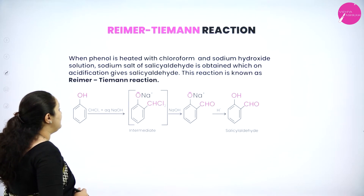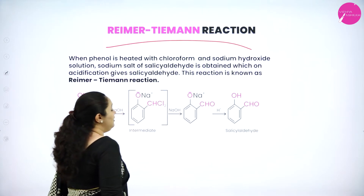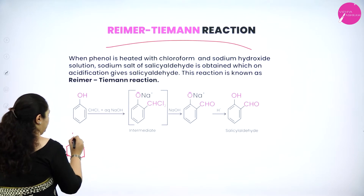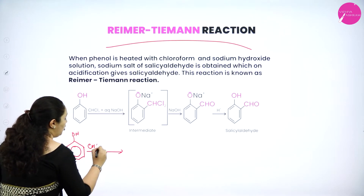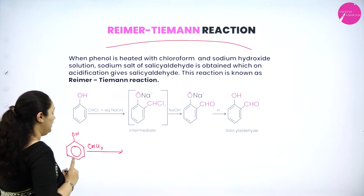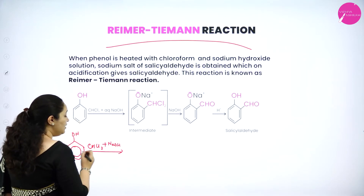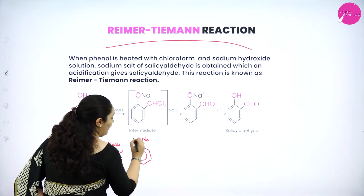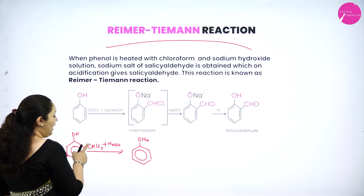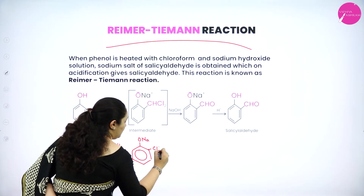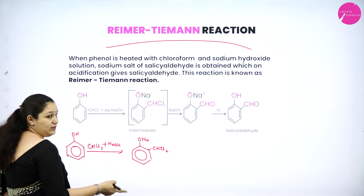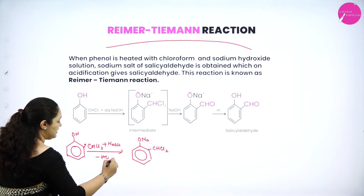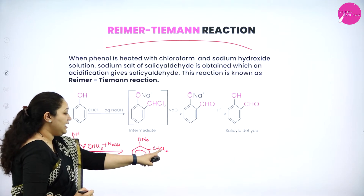Next is the Reimer-Tiemann reaction. In this reaction, phenol is treated with chloroform (CHCl3) and aqueous NaOH. What happens is: phenol gets converted to sodium phenate because of sodium hydroxide, and CHCl3 gets attached as CHCl2 — one hydrogen and one chlorine are removed as HCl from that position on the benzene ring, and instead CHCl2 gets attached.